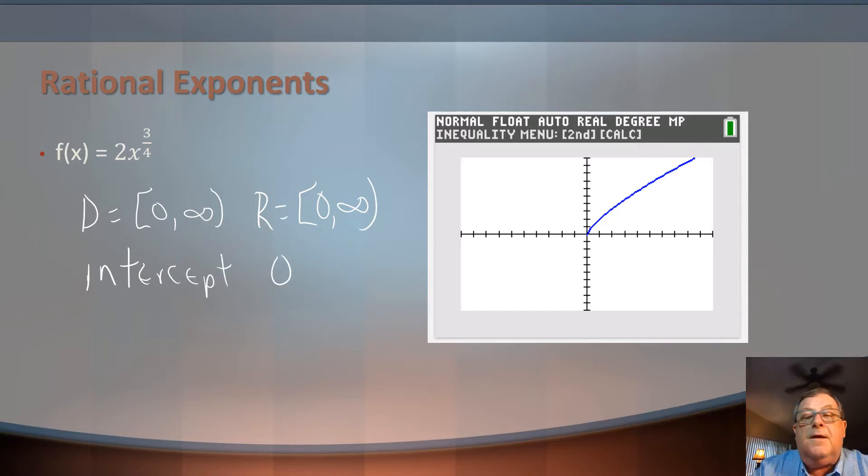Let's see, end behavior. I only got right end behavior. I don't have any left end because it just stops right there at 0. So we could say that the limit as x approaches infinity, f of x, or y, is going to equal infinity.